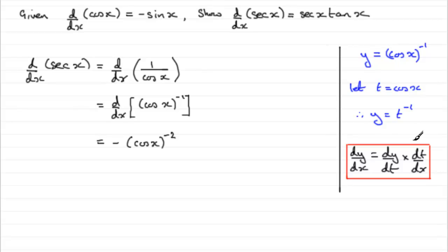And we now need to do dt by dx. So if we differentiate t with respect to x, this is where this comes in. Differentiate cos x with respect to x, we get minus sin x. So put that in brackets there, minus sin x.